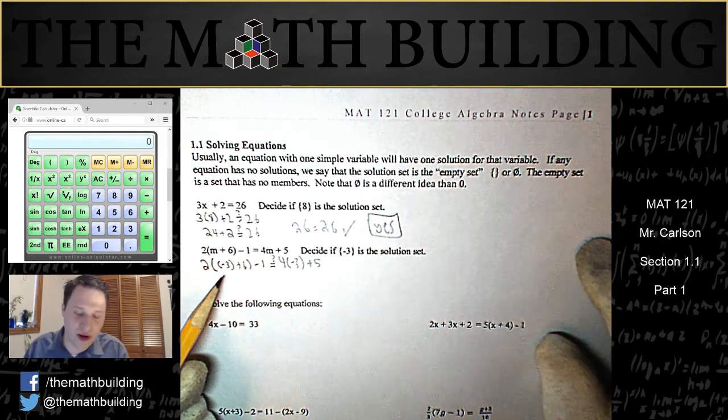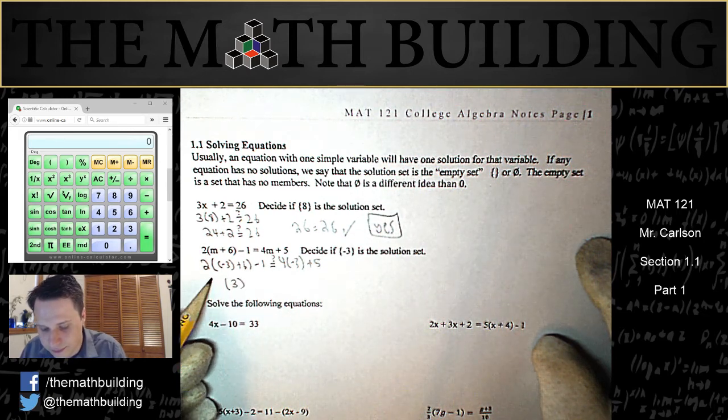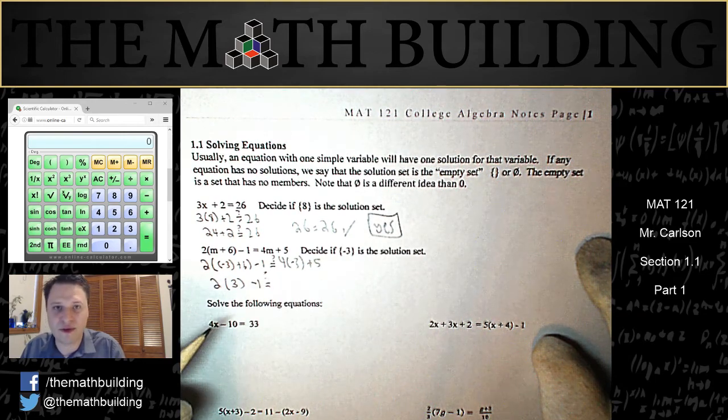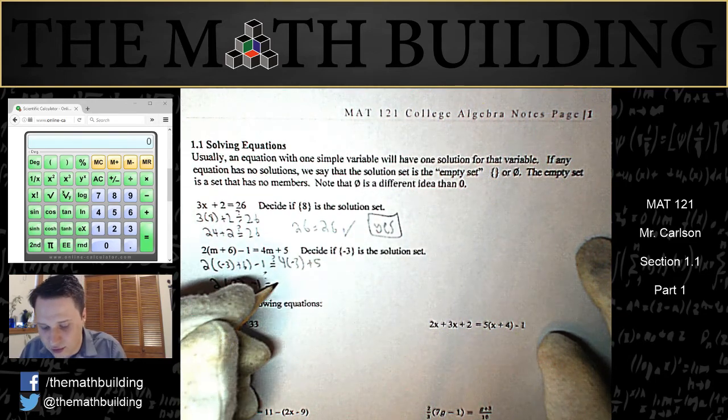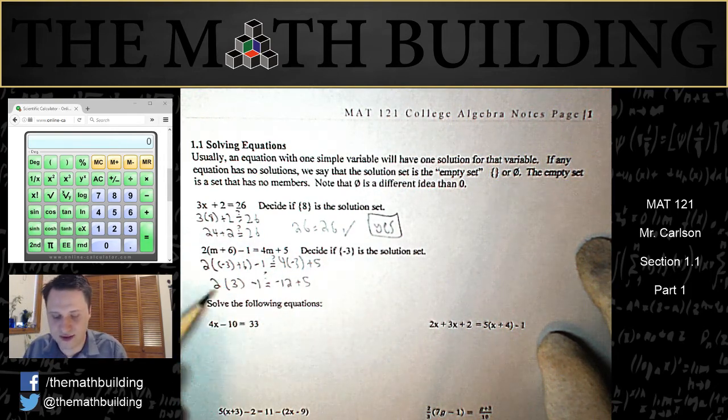Doing the order of operations, we do the inside of the parentheses first. Negative 3 plus 6 is 3, is maybe equal to—do the multiply first before the addition. 4 times negative 3 is negative 12, and these two sides are maybe equal to each other.